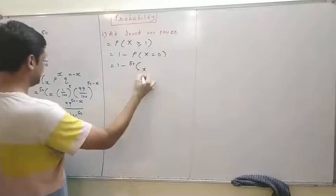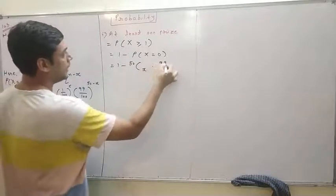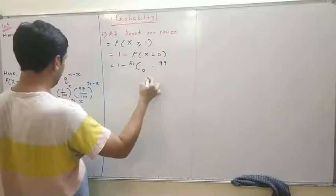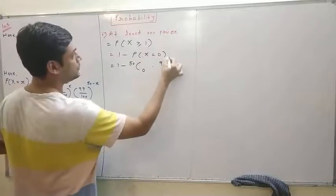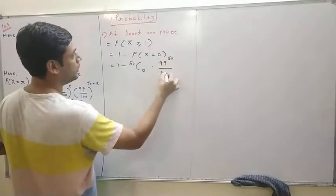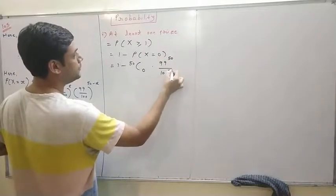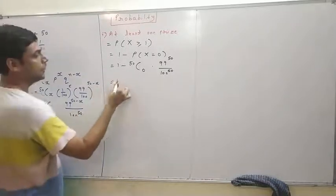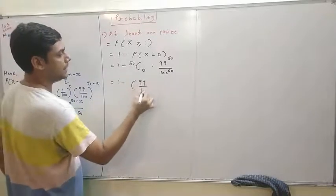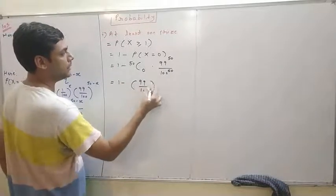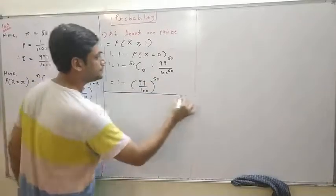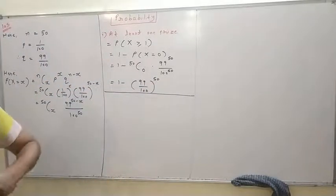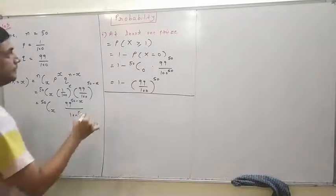Substituting x equals 0: 50C0 times (99/100) raised to 50 minus 0, divided by (100) raised to 50. So that equals 1 minus (99/100) raised to 50.